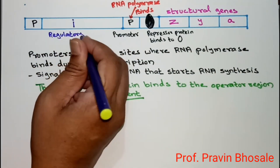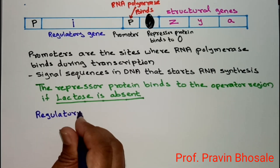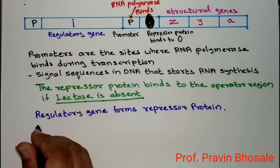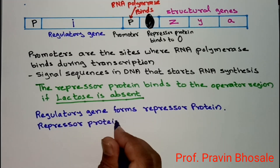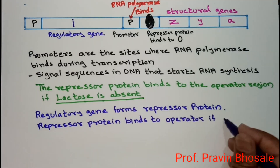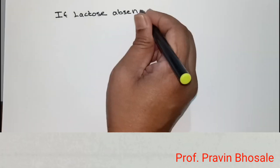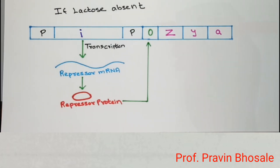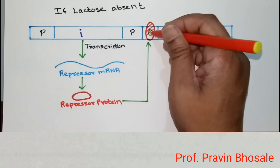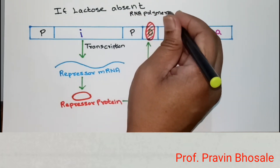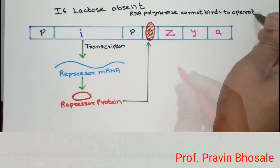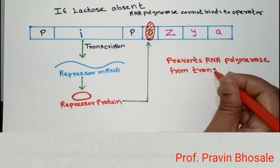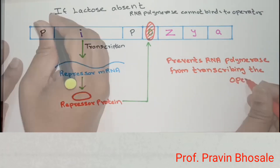I is the regulatory gene. The regulatory gene, through transcription, produces repressor mRNA, which produces repressor proteins. These repressor proteins bind to the operator region when lactose is absent, preventing RNA polymerase from binding to the operator and blocking transcription.